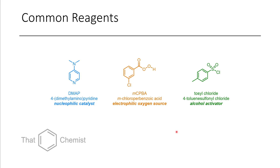I wanted to introduce a couple of common reagents as we start moving into synthesis — we won't encounter these today, but they'll be good to be aware of moving forward. The first one is DMAP, 4-dimethylaminopyridine. This is commonly used as a nucleophilic catalyst. As we'll see in the synthesis of esters and amides in the future, DMAP is quite common.